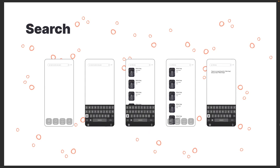For the search part, I did not complete the wireframe. However, at the beginning it has to already have some suggestions coming up — for example, ones you recently read, ones you recently looked up, trending topics, and stuff like that. I also included a page for when what you searched isn't available or was written incorrectly.